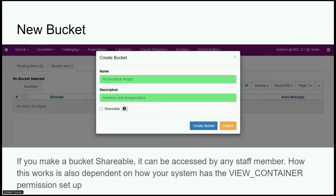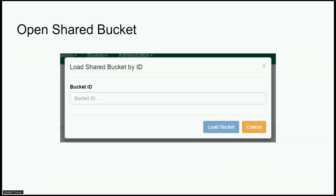When adding a new bucket, you give it a name — for example, 'my picture book project' — and a description. It's a good idea to give it a description; I have a habit of calling them 'my special project' and then forgetting what it was. If you make a bucket shareable, it can be accessed by any staff member, depending on how your system has set up the view container permission. The only way to open a shared bucket is if you have the bucket ID — so I could set up my bucket and send a message to staff saying 'take a look at bucket 3629.'